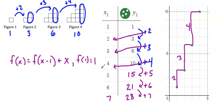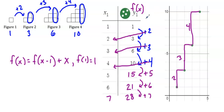A recursive rule takes you from one figure to the next. To get to the next figure, I take the previous figure and add x, where x represents the figure number and f(x) represents the number of blocks in that figure. Now I also want to create an explicit rule.